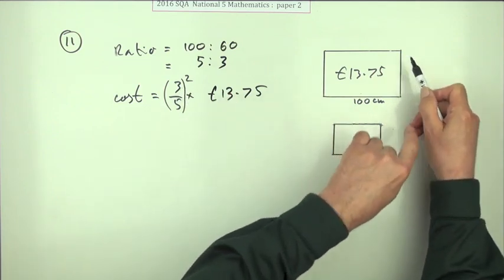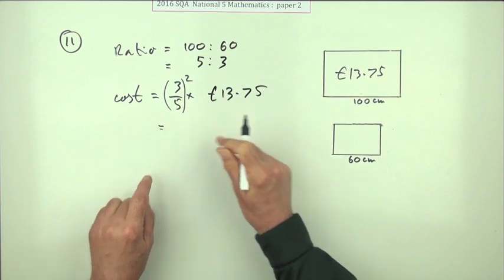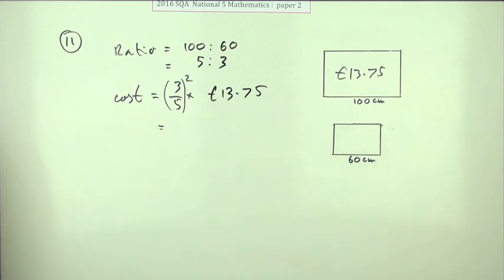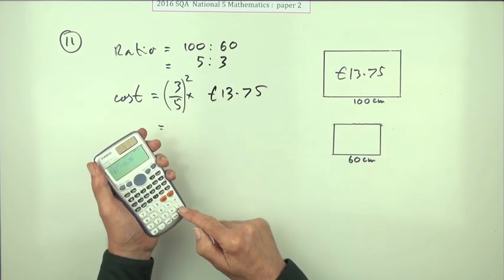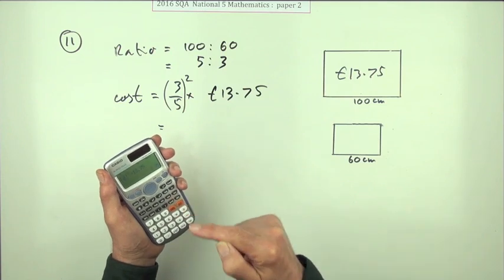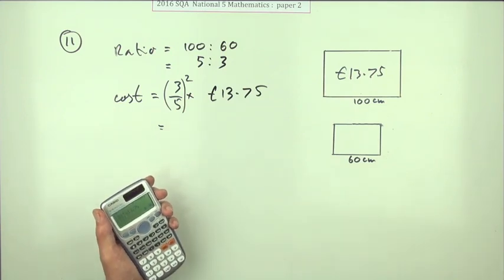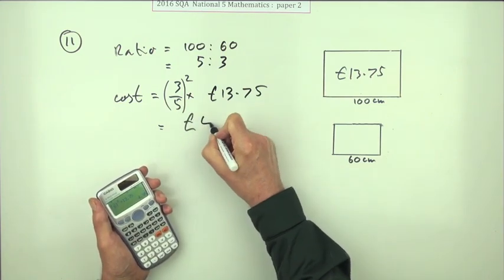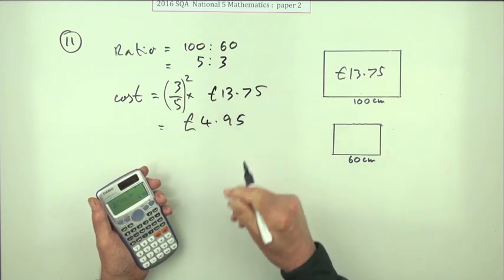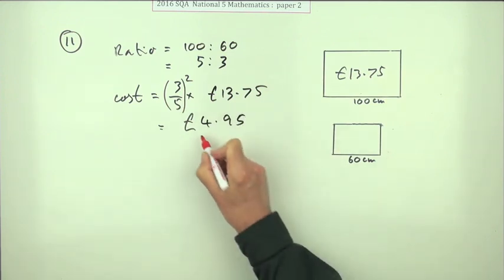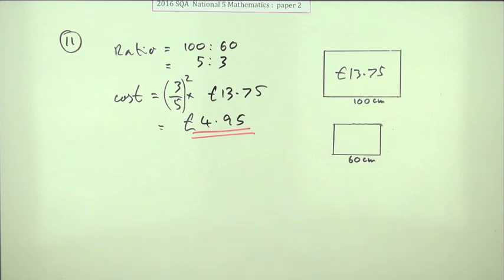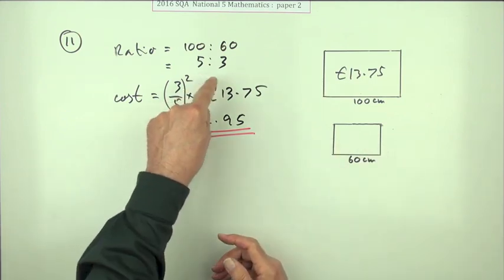So this is what you need to do: pressing the buttons and pressing it again gives you £4.95. That's all you had to do for your three marks: get the fraction, square it, and multiply it.